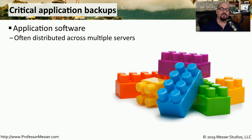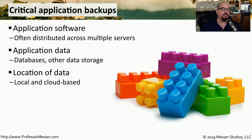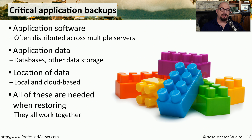Some applications will distribute the software across multiple servers, and all of those servers have to work together for the application to operate properly. Not only is the application important, but the data used by the application is just as important. Sometimes this is stored in a separate database, or the data is stored in different places on the application servers. Sometimes this information is stored on a cloud service provided by the application developer. You might have a combination of local and cloud data, so it's important to know where the data is before you begin the backup and recovery process. For complex applications, document this process prior to having a problem, so you know exactly what needs to be recovered during disaster recovery.